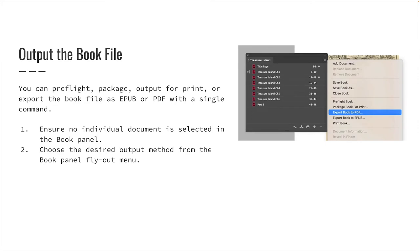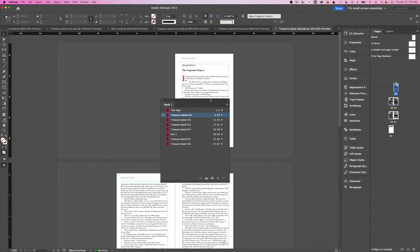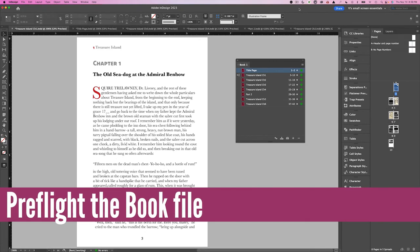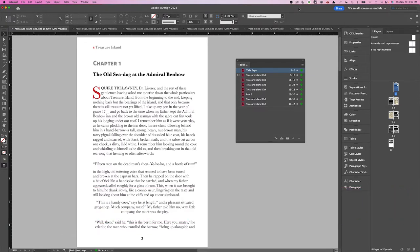Throughout this lecture, we have learned much about why using the book panel is beneficial and time-saving. The same is true when we are ready to output our book file into a print or digital book. You can preflight, package, output for print, or export the book file as an EPUB or PDF with a single command. If you want to output the entire book, ensure no individual document is selected in the book panel — simply click in the book panel below your document list in an empty area. Choose the desired output method from the book panel flyout menu.